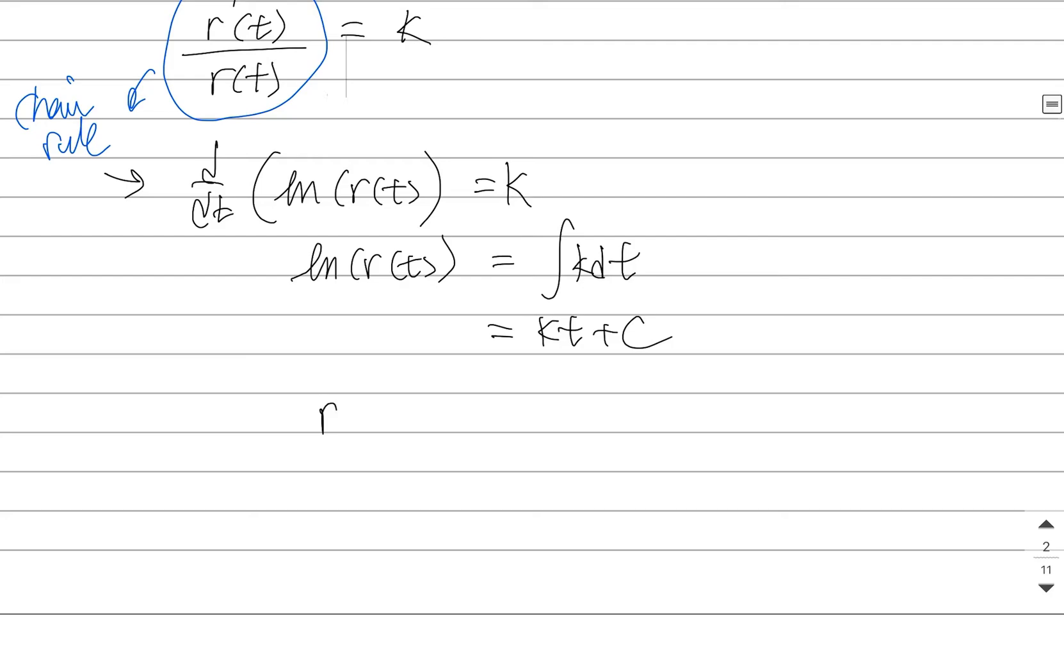And that means that if we want to find out what r is, all we need to do is undo the log. So we'll apply an exponential to both sides. We'll get e^(kt+c). A big part of this course is being really comfortable with properties of logs and exponentials. This is a property of exponentials where you're going to realize that a sum upstairs turns into a product downstairs.